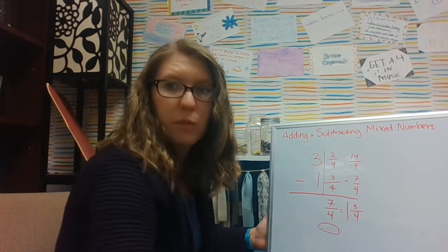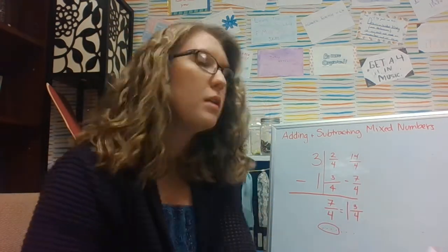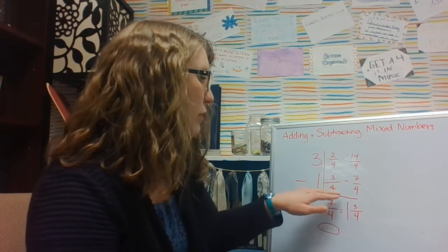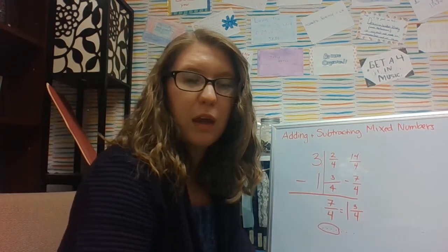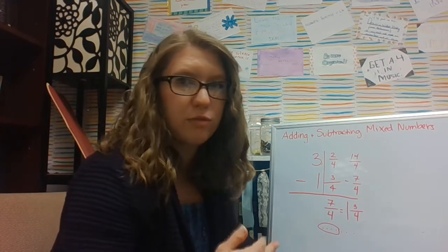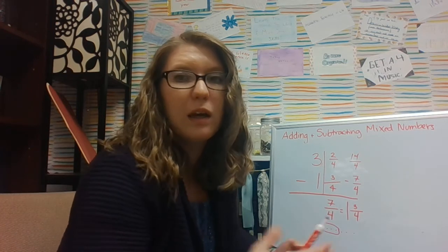So those are all of the ways that I can go ahead and subtract mixed numbers, which becomes difficult when this bottom fraction is larger than the top fraction. If it's not, then it's pretty easy and I just follow both sides separately the same way that I did for adding and then I put them together at the end.